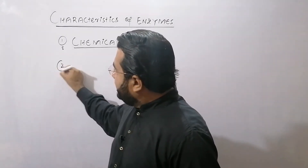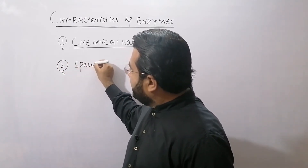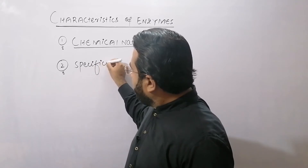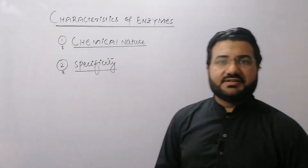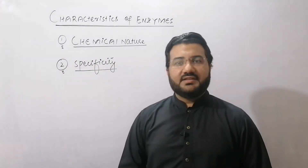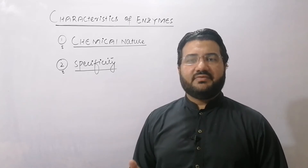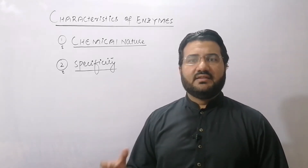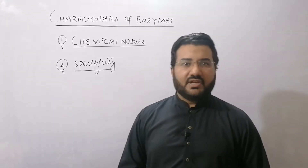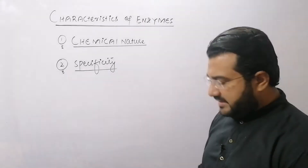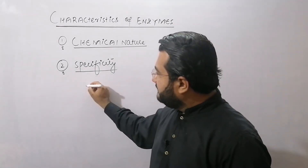The second characteristic feature is specificity. Enzymes are highly specific in their nature — one enzyme can convert one substrate molecule into the product, or you can say one enzyme catalyzes one reaction or a limited number of closely related reactions. This specificity of the enzyme is related to its specific shape.